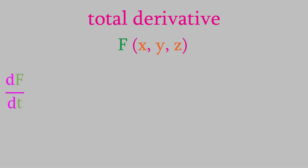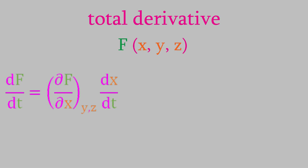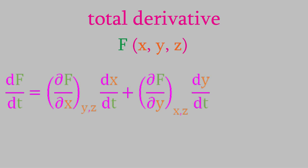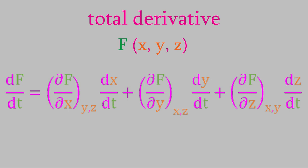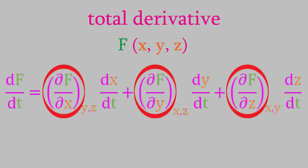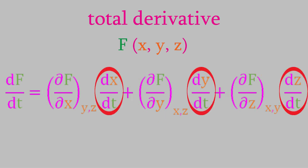We do that by taking the total derivative of f with respect to t. The total derivative of f is defined as the partial derivative of f with respect to x, times the derivative of x with respect to t, plus the partial of f with respect to y, times the derivative of y with respect to t, plus the partial of f with respect to z, times the derivative of z with respect to t. So, in other words, we take the partial derivative of f with respect to each of the variables, each time multiplying by the derivative of the variable with respect to the new variable that we're differentiating f with respect to.